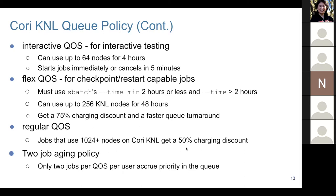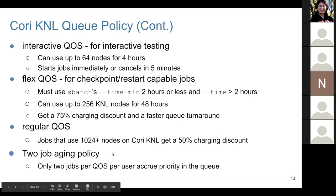In general, VASP users cannot reach 124 nodes since VASP typically doesn't run at that scale. But if you manage to bundle VASP jobs, you may be able to get that advantage. Also be aware of the two-job aging policy: only two jobs per QoS per user gain priority in the queue, which could largely affect your throughput.